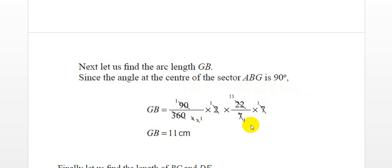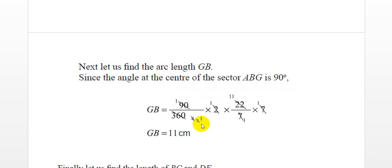So the arc length = (90/360) × 2 × (22/7) × 7. Cancelling 7 with 7, and 90 with 360 gives 1/4, then cancelling 2 and 4 gives 1/2, then cancelling 2 and 22 gives 11. Therefore the arc length GB = 11 centimeters.